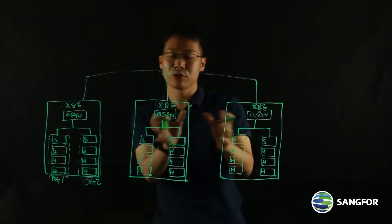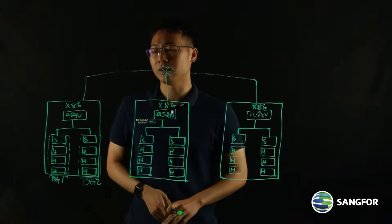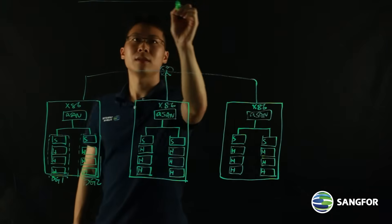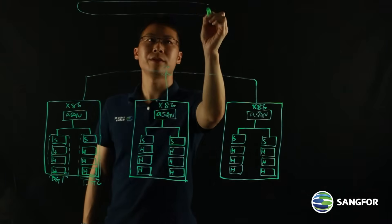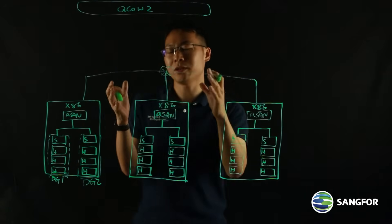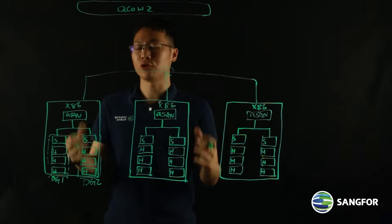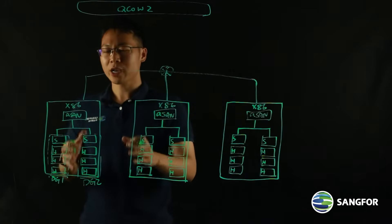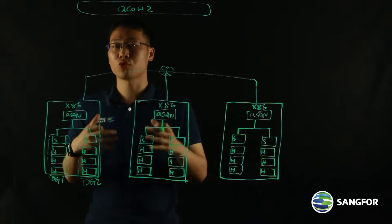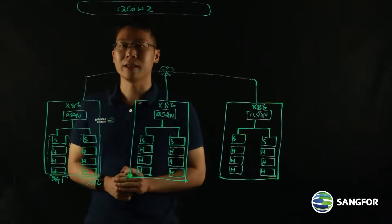The same applies to the other 2 nodes. When we store VM data on our ASAN, it is stored as a QCOW2 file. So let's say we have a QCOW2 file here — you can consider it as the equivalent of a virtual disk for a virtual machine running on HCI. When I create and initialize a VM, there will be a stripe width that is automatically configured by the HCI platform.